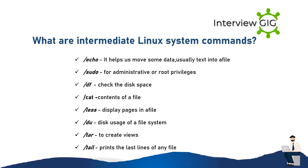What are the intermediate Linux system commands? echo: helps move data, usually text, into a file. sudo: for administrative or root privileges. df: check the disk space. cat: contents of a file. less: display pages in a file. du: disk usage of a file system. tar: to create archives. tail: prints the last lines of any file.